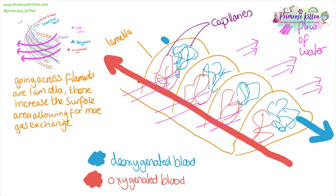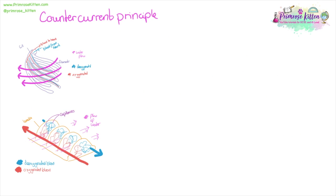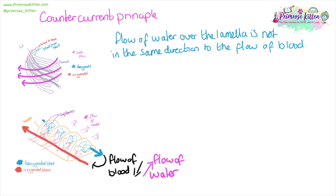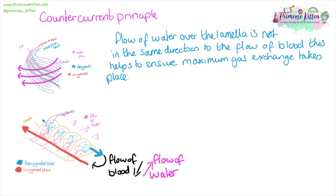We have oxygenated blood going this way and deoxygenated blood going this way, and the flow of water like this. In the middle we have all of the capillaries which are going to be picking up the oxygen. This ensures maximum oxygen uptake from the water by using the counter current principle. The flow of water over the lamella is not in the same direction as the flow of blood — the blood flows from deoxygenated to oxygenated, while the flow of water is in the opposite, counter current direction to the flow of blood.